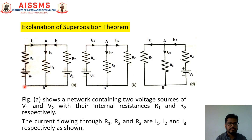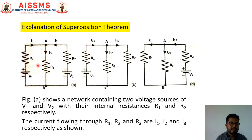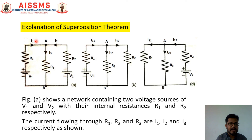Now let us see how to apply the Superposition Theorem to find out the current flowing through the AB branch of the given network shown in Figure A. In this network there are two voltage sources V1 and V2. R1 and R2 are the internal resistances of sources V1 and V2 respectively. Let I1, I2, and I3 be the currents flowing through resistances R1, R2, and R3 respectively.